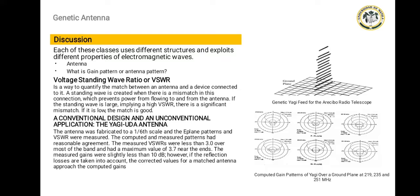The non-conventional application: the Yagi-Uda antenna. This antenna was propagated to a 1 over 6 scale and the E-plane patterns and the VSWR are measured. The computed and measured patterns had reasonable agreement. The measured VSWRs were less than 3.0 over most of the band and had the maximum value of 3.7 near the ends. The measured gains were slightly less than 10 dB.